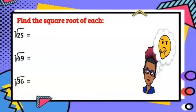Now let's find the square root of each. So first let's find the square root of 25. Our square root of 25 is 5, because 5 multiplied by 5 would give us 25. Our square root of 49, we have 7. 7 times 7 is equal to 49.